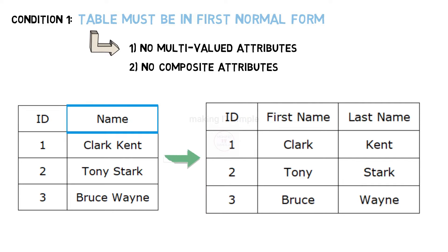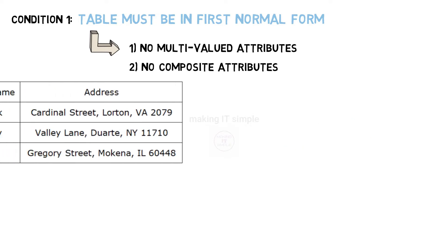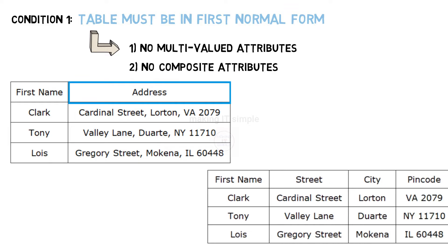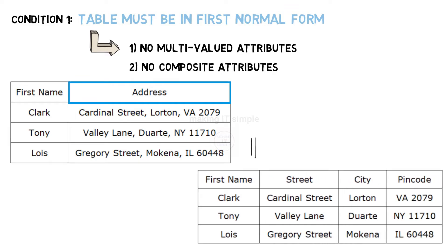We can modify it like this to make it in 1NF. Consider this table and check if it is in 1NF. This also is not in 1NF. You must have guessed it until now. Yes it contains composite attribute address. To make it into 1NF we can modify it like this.